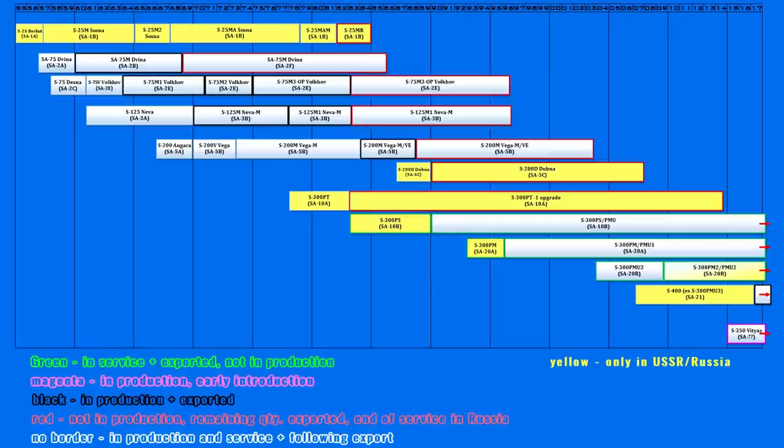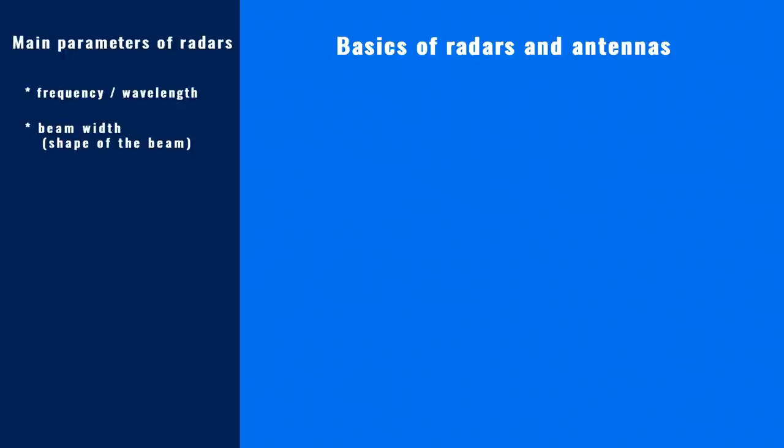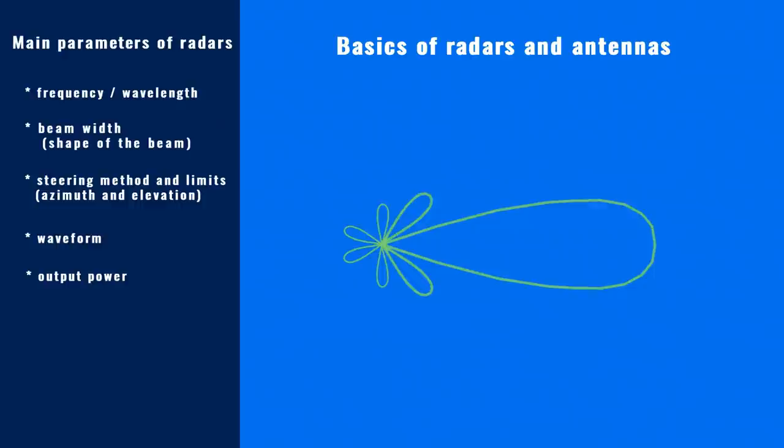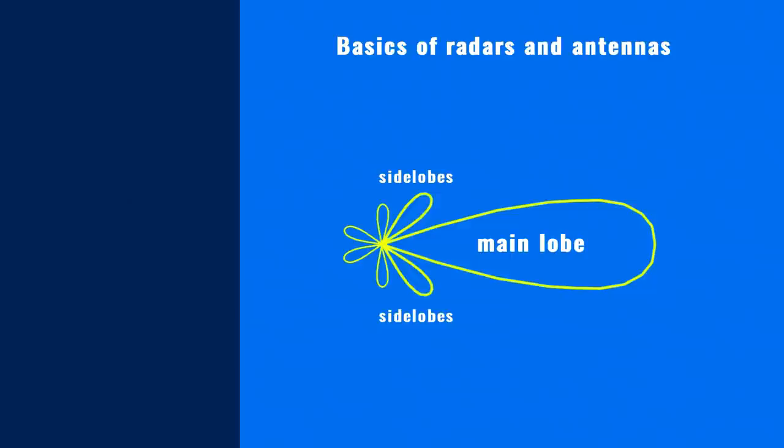To understand the capabilities and limitations of SAM systems, at least the minimal physics and technical background of SAM systems has to be explained. Every homeland air defense system is designed to operate a radar for target tracking. Radars generally emit radio waves in a cone-shaped area, regardless of their operational frequency, wavelength, waveform and antenna types. This is called the main lobe. Antennas also produce side lobes and even back lobes, but these will be discussed later.